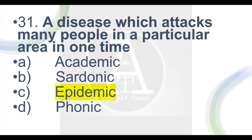Think about coronavirus — it attacked many people at once. Now let's look at the options. Option A is 'academic' — academic means sachik. Option B is 'sardonic' — sardonic means tiraskarpoor, nindapoor, meaning scornful or contemptuous. Option C is 'epidemic'.